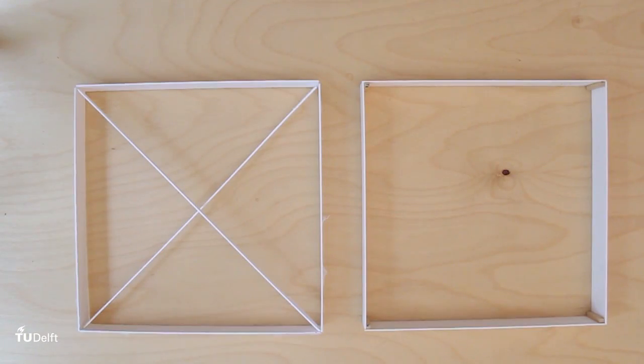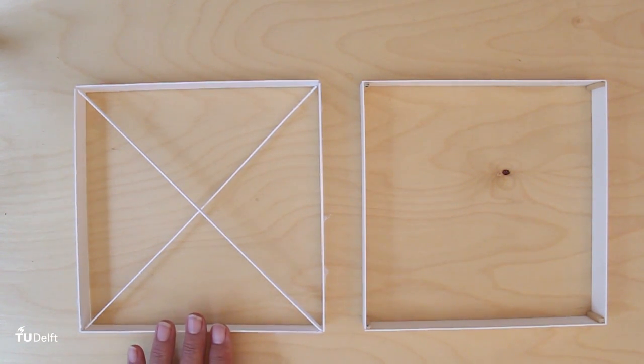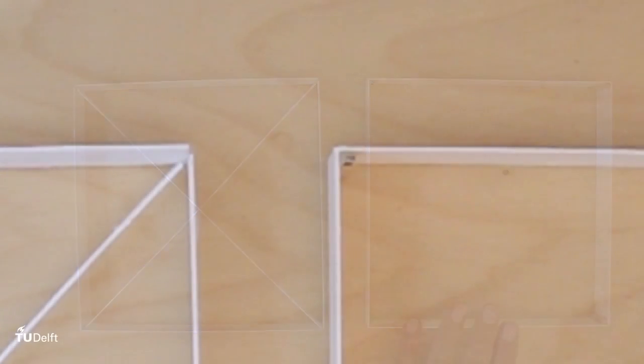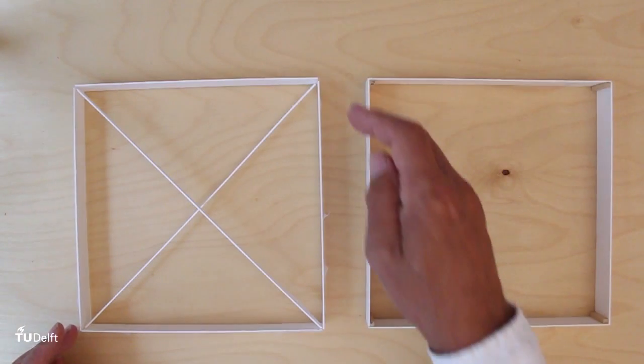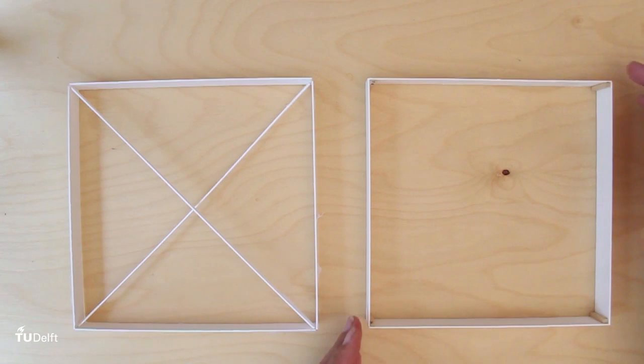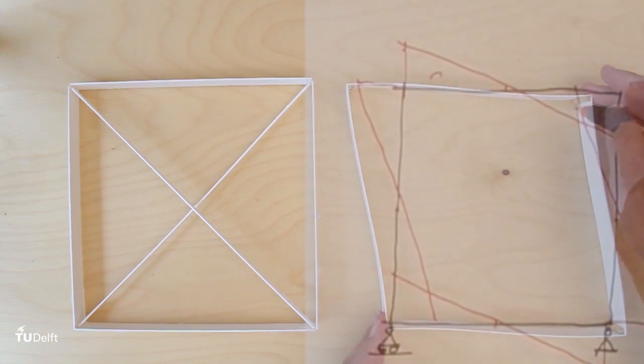These models are made of the same amount of material. The one on the left is a brace frame with hinges in the corners, and the other is a rigid frame with glued fixed corners. When I put a load on both, you see how they deform. The first doesn't give way; in the second, you can see these deformations which are related to these bending moments.